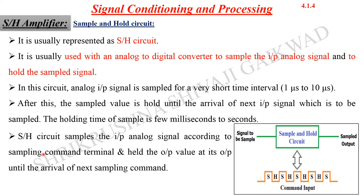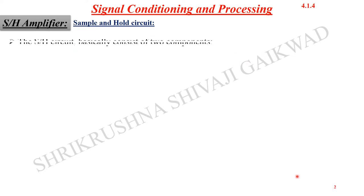The sampling circuit samples the input analog signal according to the sampling command terminal and holds the output value at its output until the arrival of the next sampling command. It will be sampled until the next command comes, then held again until the next input command arrives and it is sampled once more. The timing intervals of sampling and holding can also be adjusted.